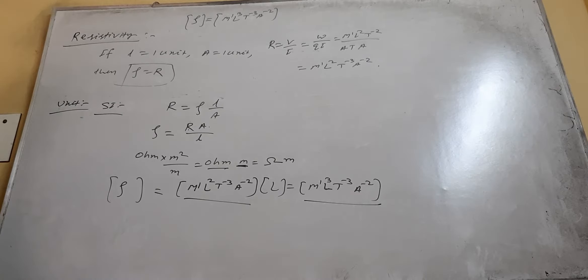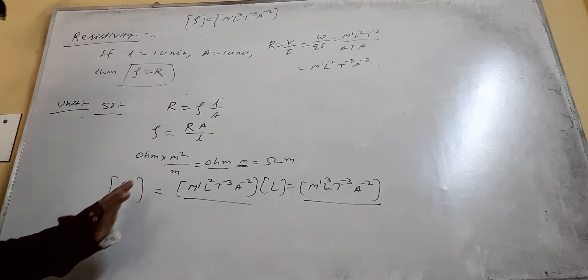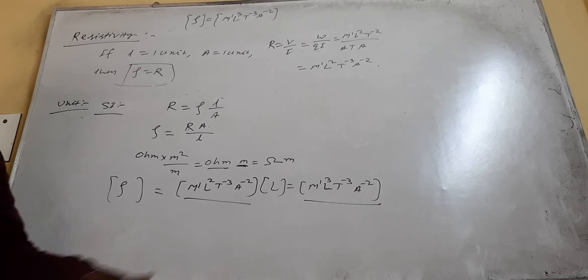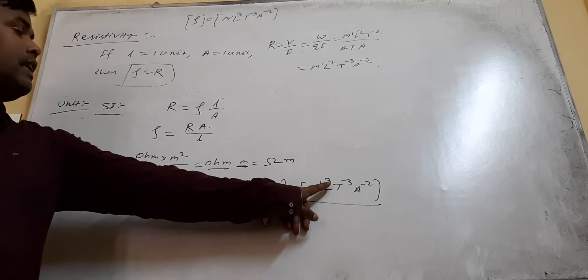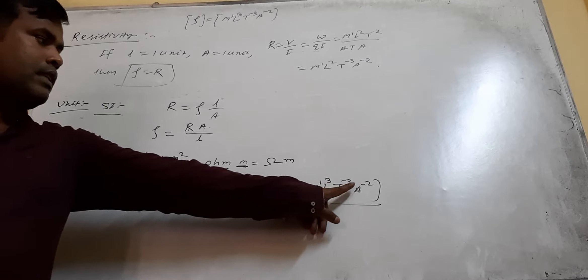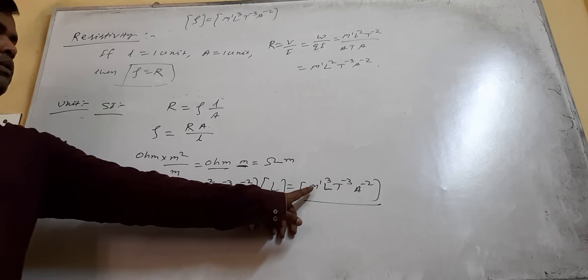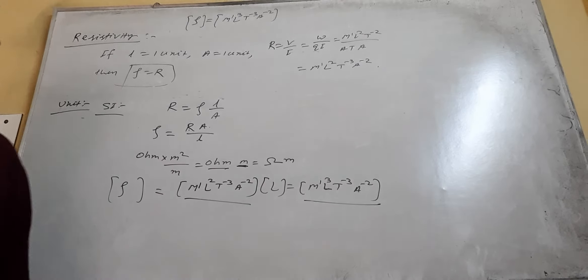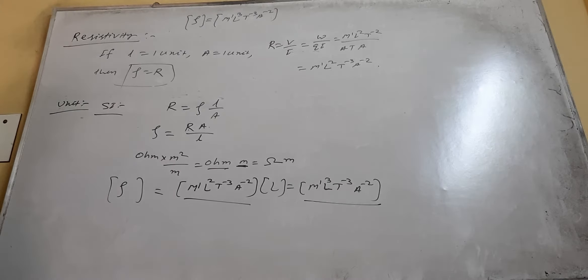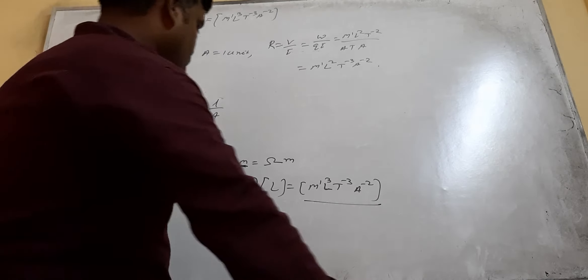So the dimensional formula of resistivity is M1L3T-3A-2, with dimensions 1, 3, -3, -2 in terms of mass, length, time, and current respectively.